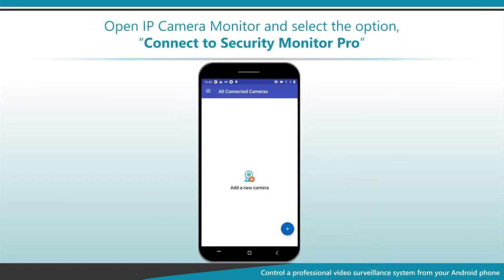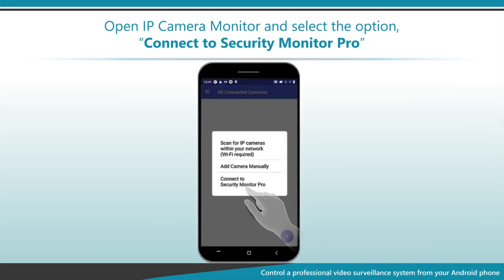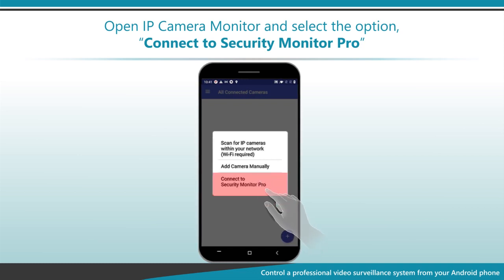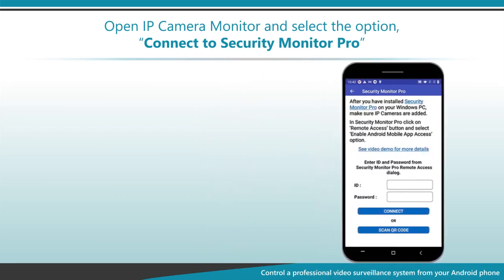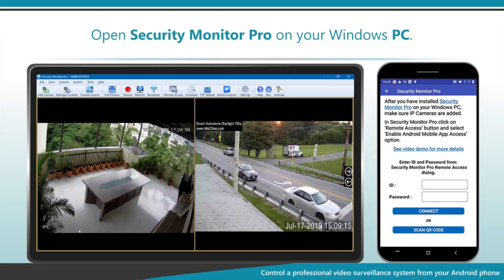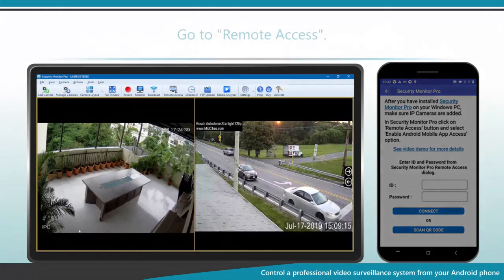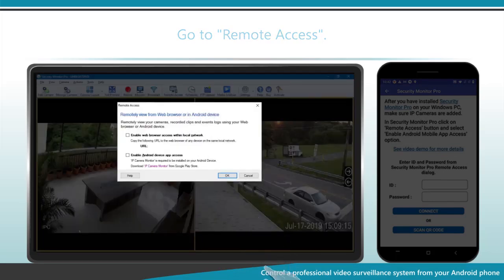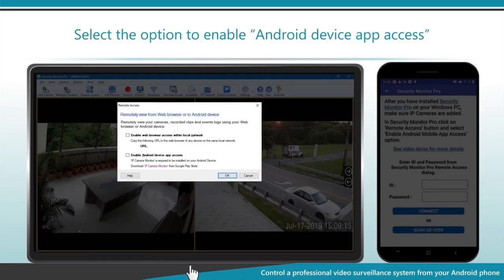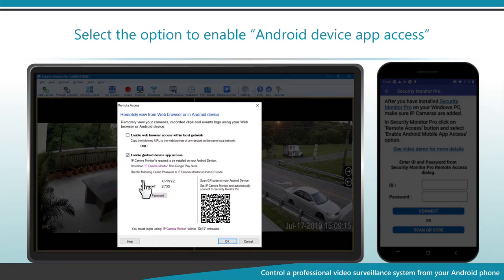Open IP Camera Monitor and select the option Connect to Security Monitor Pro. Open Security Monitor Pro on your Windows PC. Go to Remote Access. Select the option to enable Android device app access.